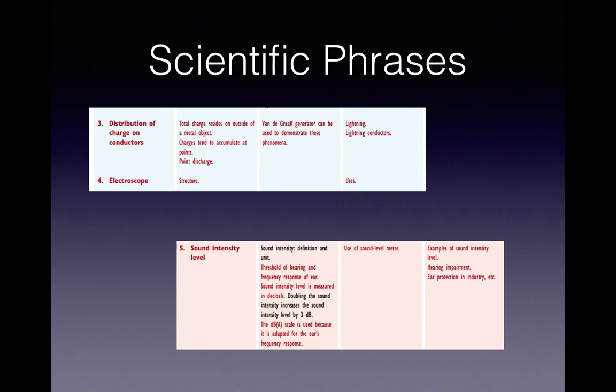And very often, if this comes up, you'll get a question: what is the effect of doubling the sound intensity? And you just state that sentence exactly for full marks. The other one there is just below the black text. The decibel adapted scale is used because it's adapted for the ear's frequency response. And again, that's a sentence you just learn off. So go away, underline these in the syllabus and just memorize these phrases immediately.